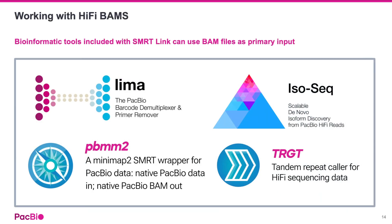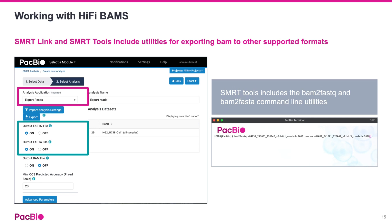Bioinformatic tools that are included with SmartLink, and many of the tools available on the PacBio GitHub, can use the unaligned HiFi reads BAM as a primary input. For those cases where other file formats are needed, SmartLink offers data utility tools under the Smart Analysis module to export sequences as FastQ or FASTA files. The BAM2FastQ and BAM2FASTA command line tools provide the same capability through a command line interface.